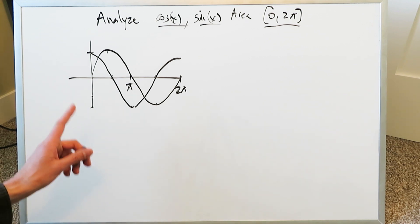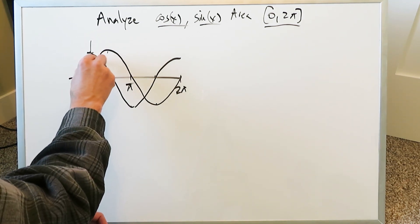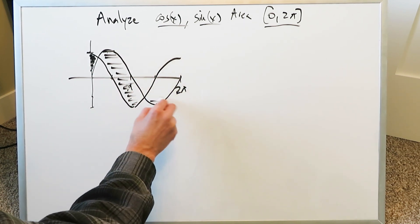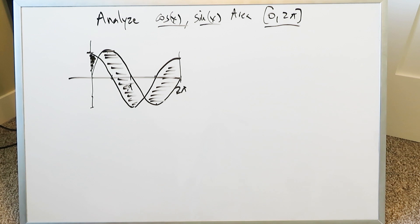When looking at the area between the curves, we have these regions. In some areas, cosine is superior in orientation. In other areas, the sine curve is superior, meaning higher or lower.